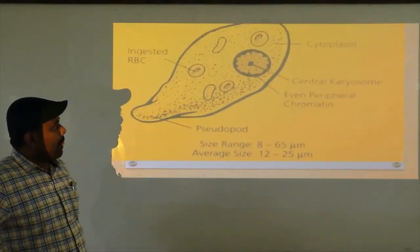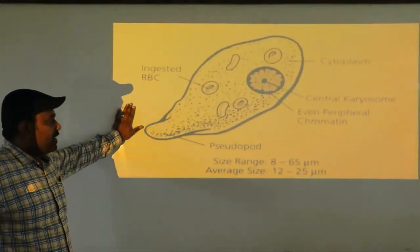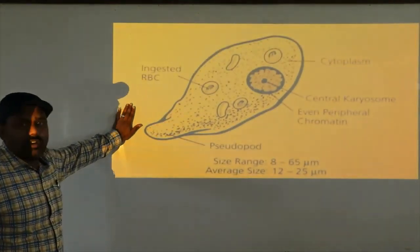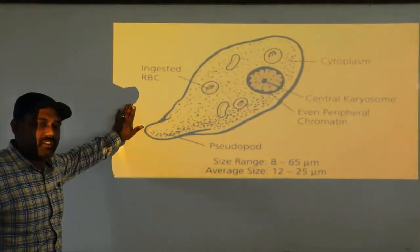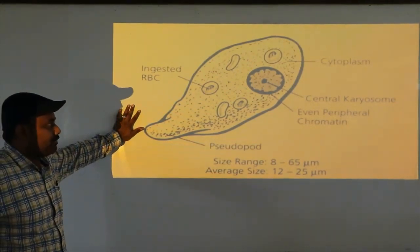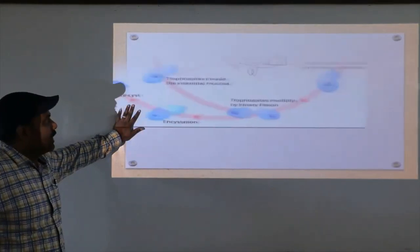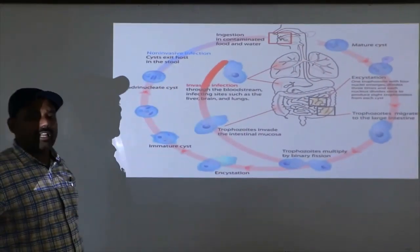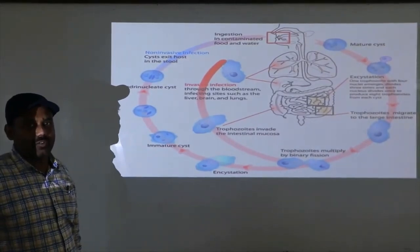This is the diagrammatic representation of Entamoeba histolytica. Next, this is the life cycle of Entamoeba histolytica.